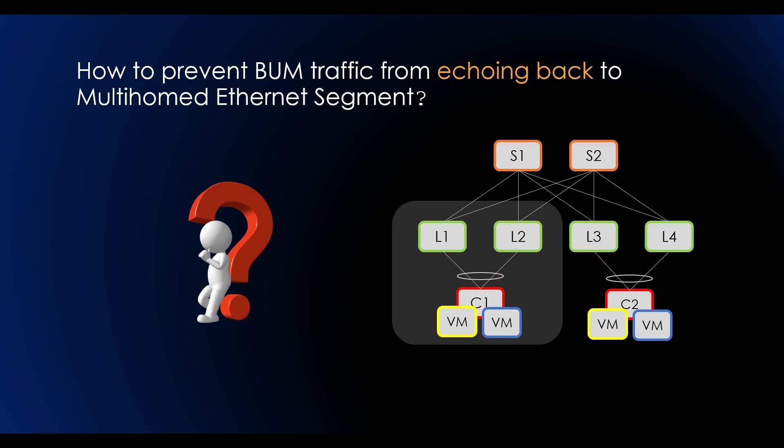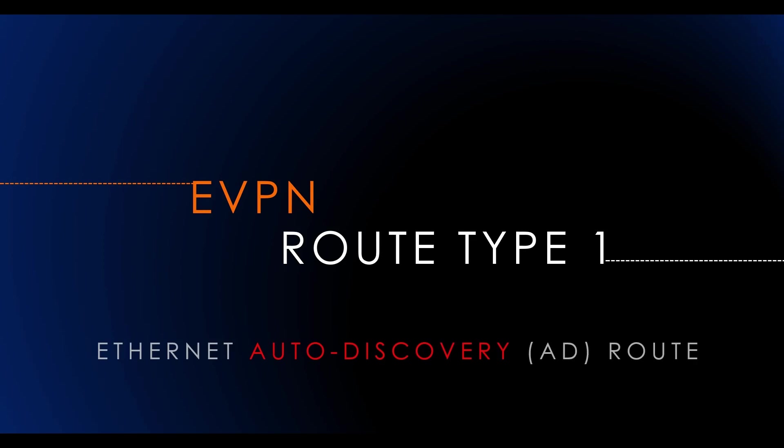How to prevent BUM traffic from echoing back from a multi-homed Ethernet segment. Hello friends, my name is Sabi and in today's video we will discuss how EVPN addresses various features using route type 1, which is called Ethernet auto-discovery route.